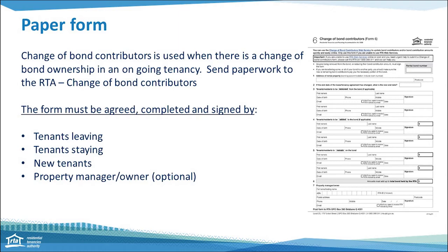Let's have a look at our current paper form process. The change of bond contributors form is used when there is a change of bond ownership in an ongoing tenancy. The form is completed, agreed, and signed by all parties including the tenants who are leaving, the tenants who are staying, the new tenants who are moving in, and optionally the property manager or owner. All forms can be downloaded from the RTA's website — remember to use the latest form versions.